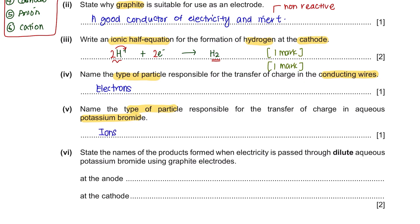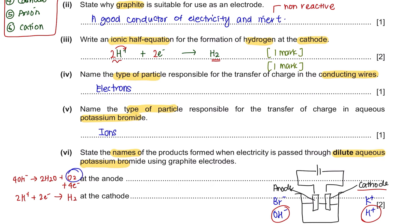Part 6. State the names of the products formed when electricity is passed through dilute aqueous potassium bromide using graphite electrodes. To name the products, we have to first identify the ions present in the electrolyte. The positively charged ions will be attracted to cathode, and the negatively charged ions will be attracted to anode. According to the reactivity series, at cathode, hydrogen will be discharged, and at anode, hydroxide ions will lose electrons and oxidize to form oxygen gas. So the product at anode will be oxygen gas, and at cathode will be hydrogen gas.